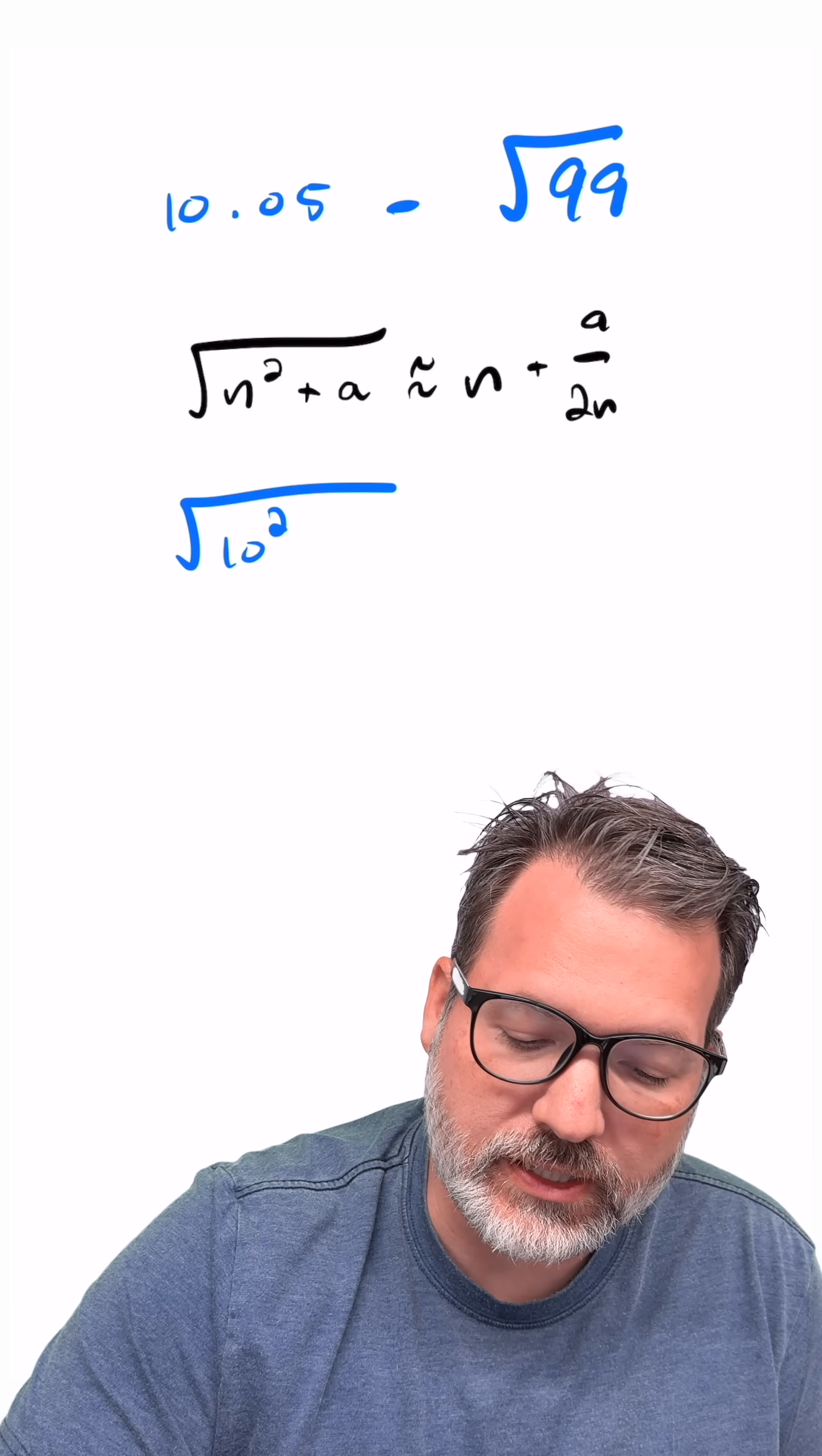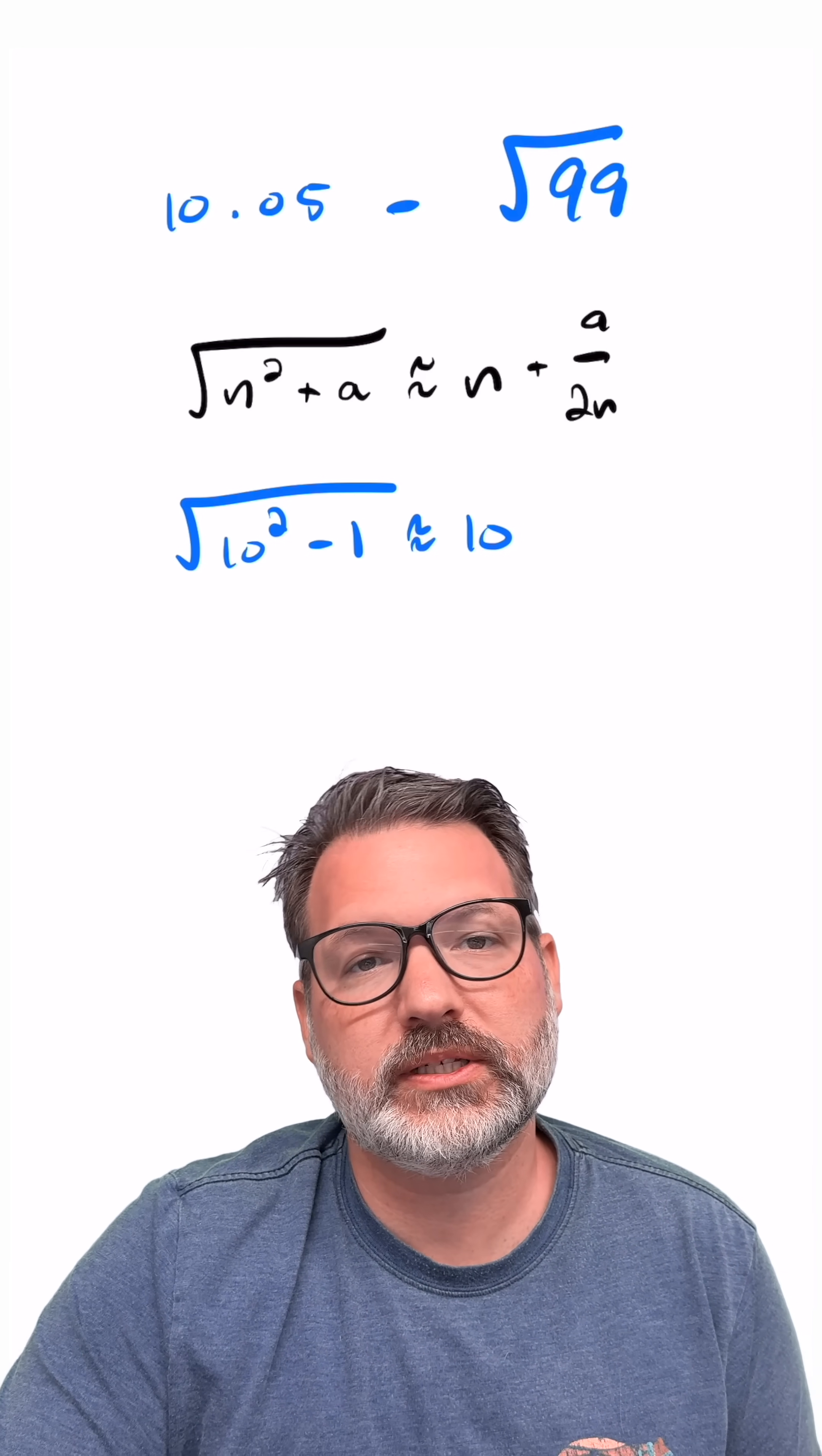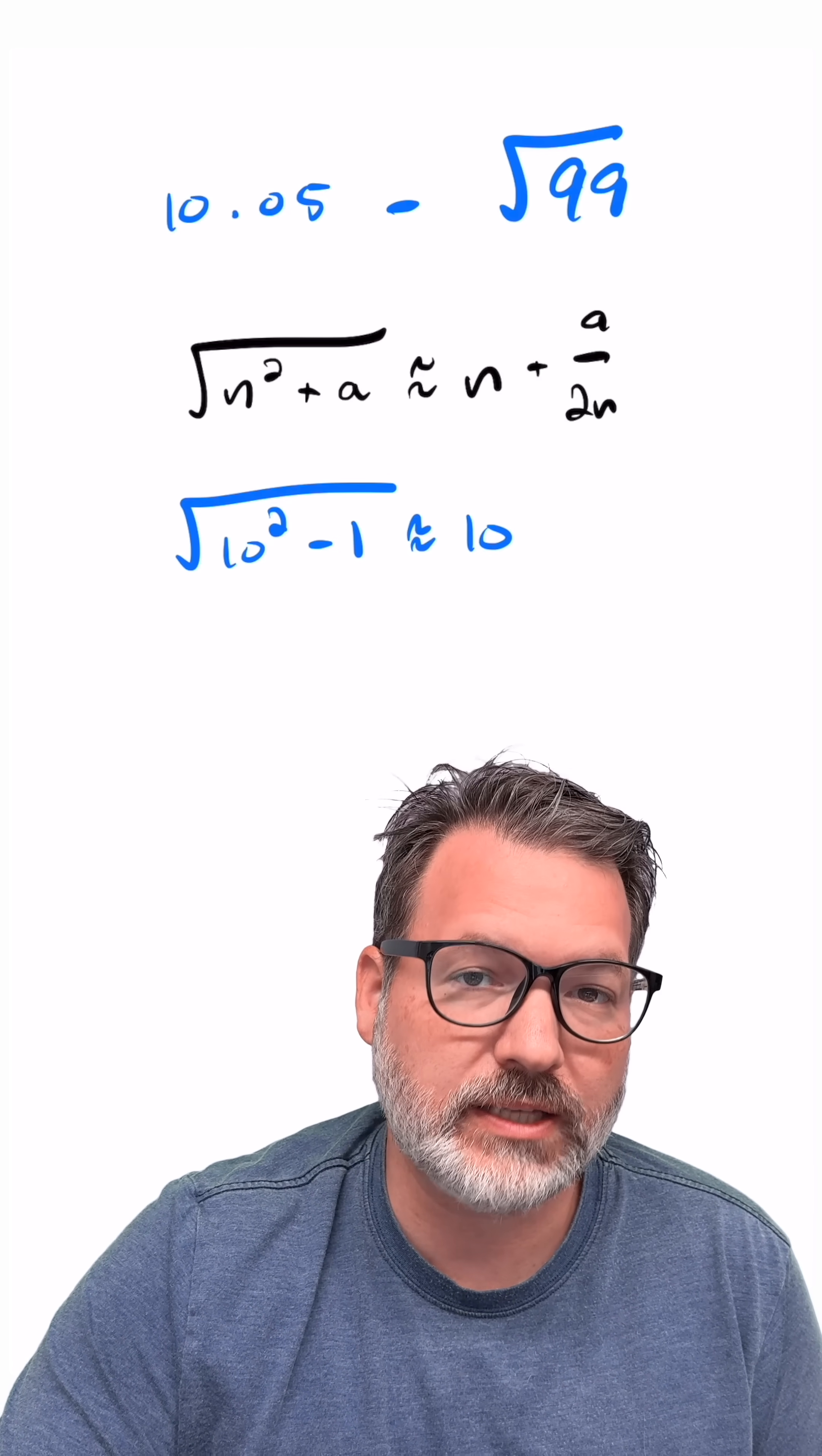99, of course, is the same thing as 10 squared minus 1. And so coming back over here, again, we take the square root of the perfect square part. That gets us the 10.